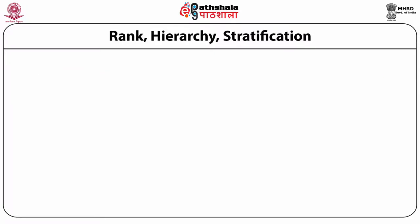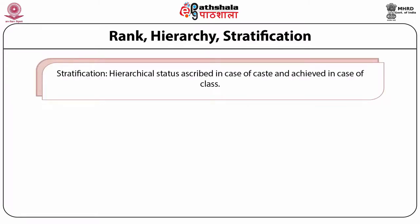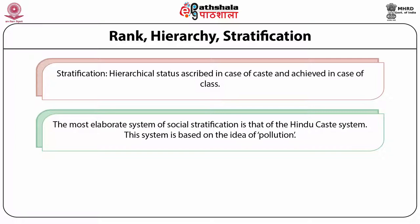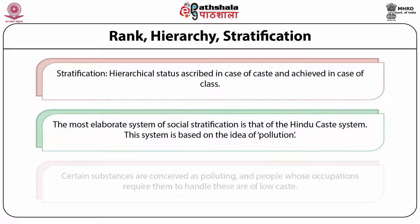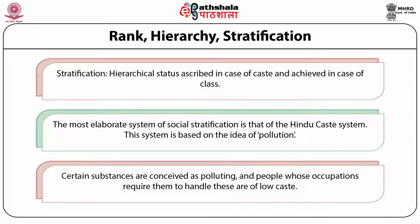Another form of social stratification is based on caste and class. Hierarchical status is described in the case of caste and achieved in the case of class. The most elaborate system of social stratification is that of the Hindu caste system. This system is based on the idea of pollution. The idea is that people who live in such a way as to avoid pollution have higher status than those who incur it. Certain substances are conceived as polluting, and people whose occupations require them to handle these are of low caste.